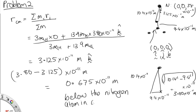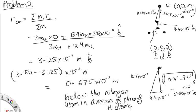That is not exactly what the question asks for. The question asks us to locate the center of mass relative to the nitrogen atom. So we do 3.80 minus 3.125, times 10⁻¹¹ meters, giving 0.675 times 10⁻¹¹ meters below the nitrogen atom, in the direction of the plane of the hydrogen atoms.